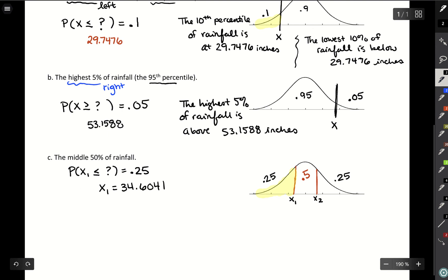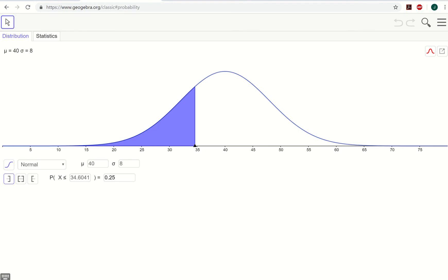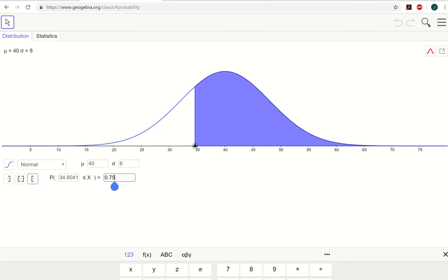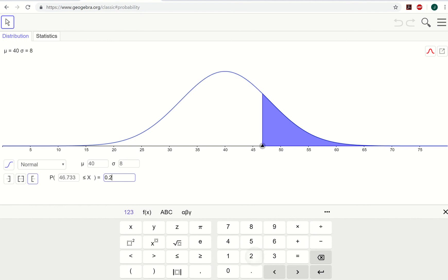And then we can do the same thing for x2, where we can find where is the area above some point, that 25 percent. So looking for probability X is larger than some number should be 25 percent. So in GeoGebra we can get out x2 by plugging in that upper area, so area to the right, change that to 0.25, and there's a 45.3959.